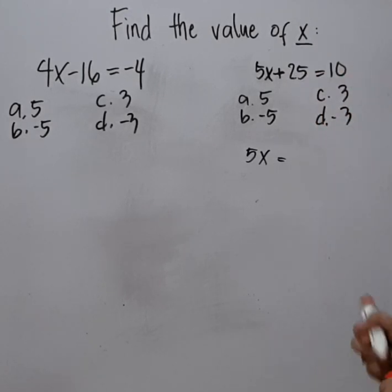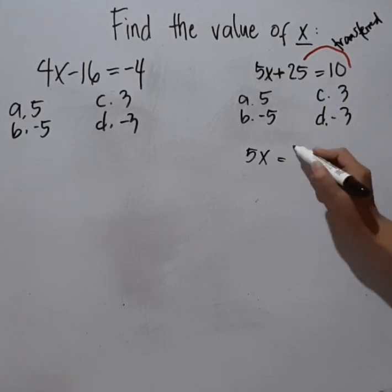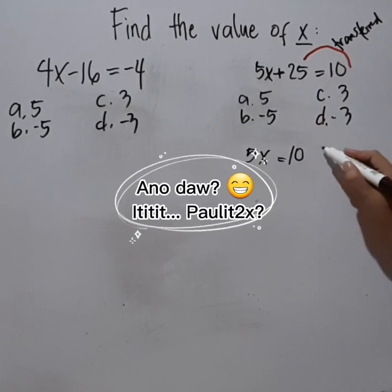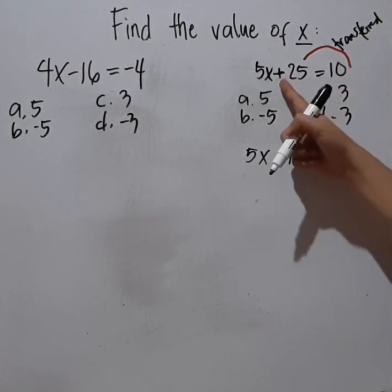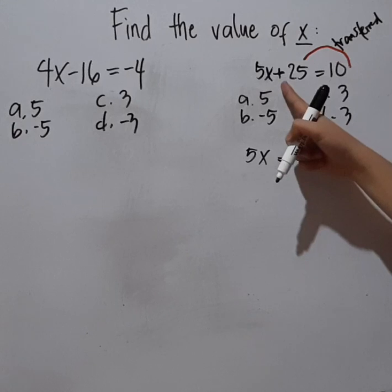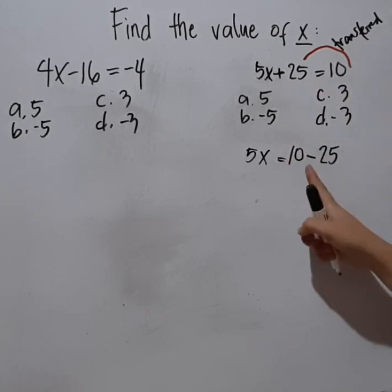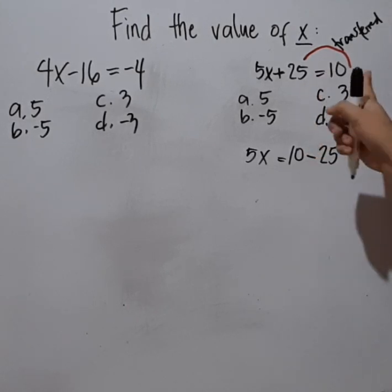It will go to the right side. Transferred. So it will become like this: 10. Copy the 10. And then, since you'll transfer the 25. The rule is once you transfer it to the other side, whatever the sign here will be changed. Since this is positive, now it will become negative here. So if it's negative, this one will be positive. So those are the rules once we transfer.